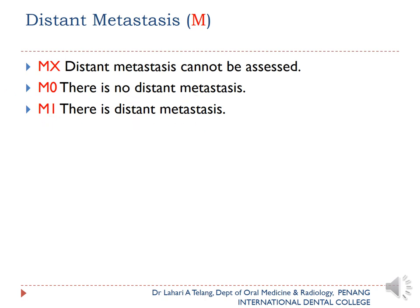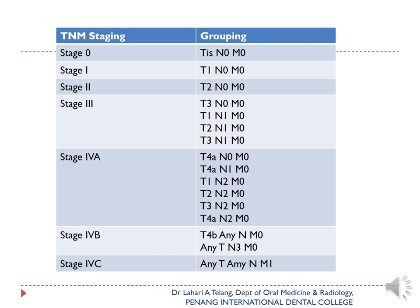Overall TNM staging: Stage 0 is Tis N0 M0; Stage 1 is T1 N0 M0; Stage 2 is T2 N0 M0; Stage 3 includes T3 N0 M0, T1 N1 M0, T2 N1 M0, or T3 N1 M0. Stage 4 — categories 4a, 4b, and 4c — are classified based on further lesion and node criteria.